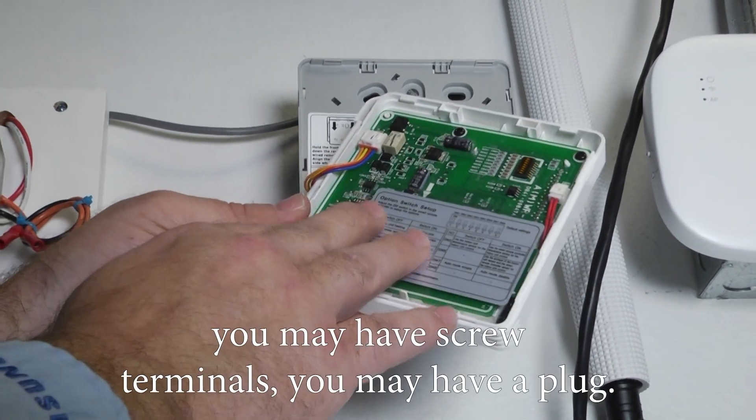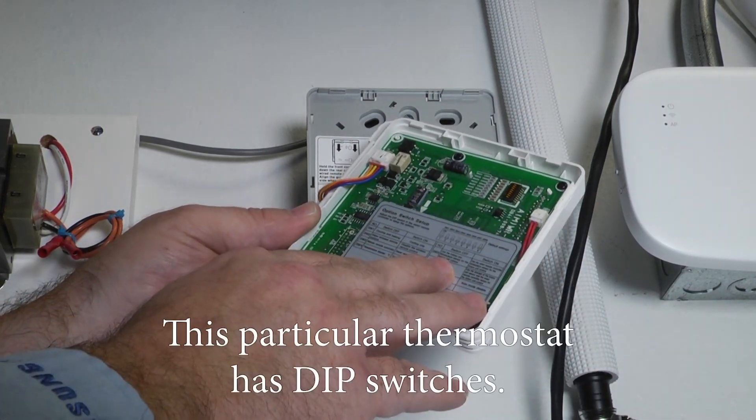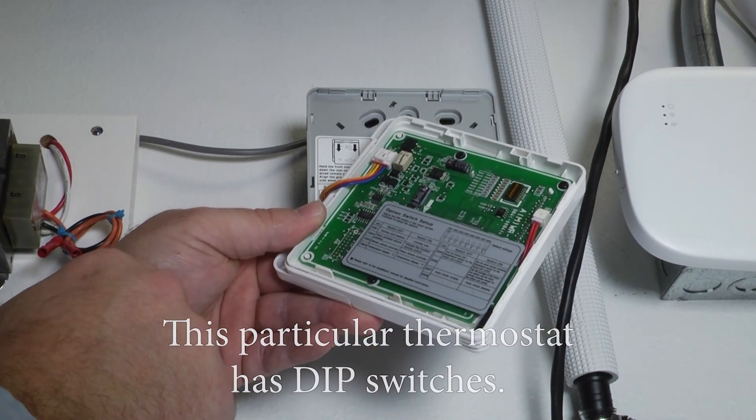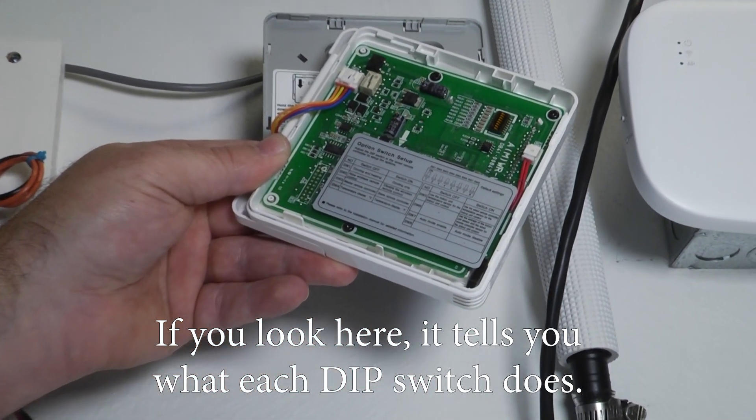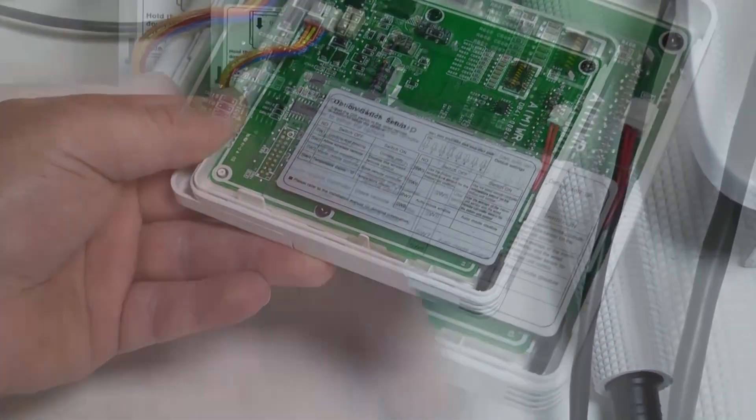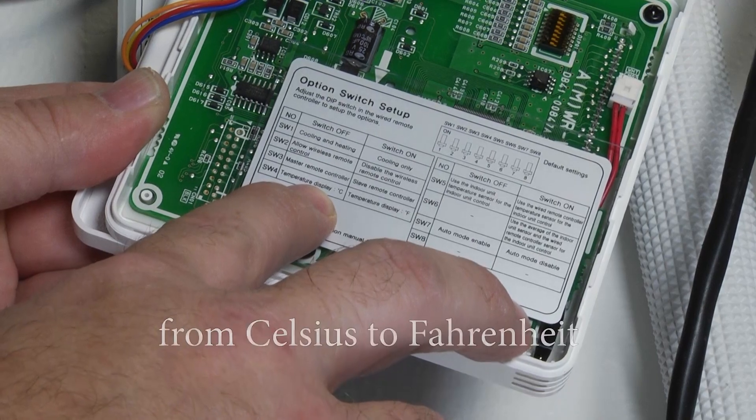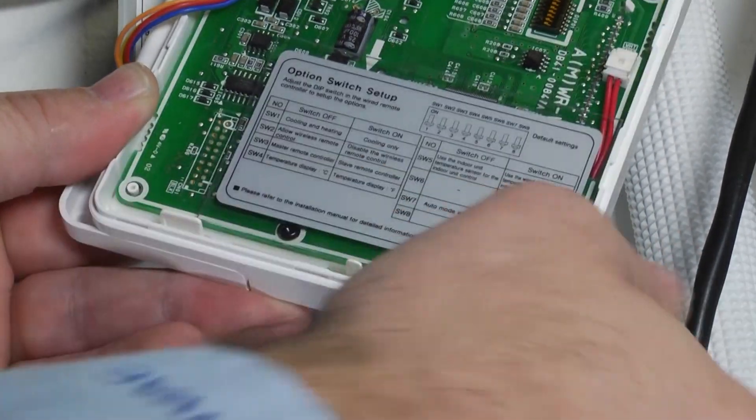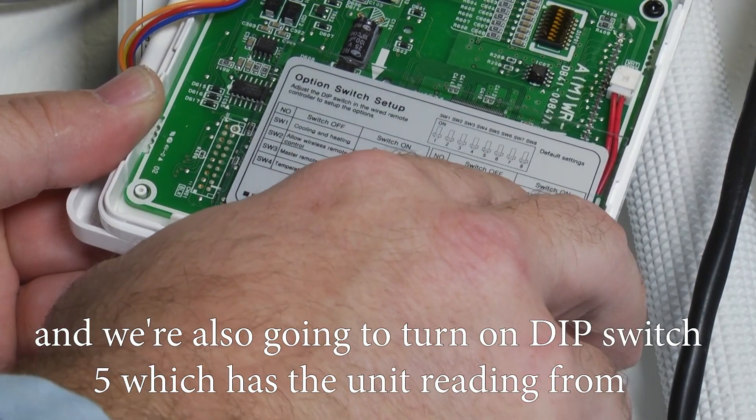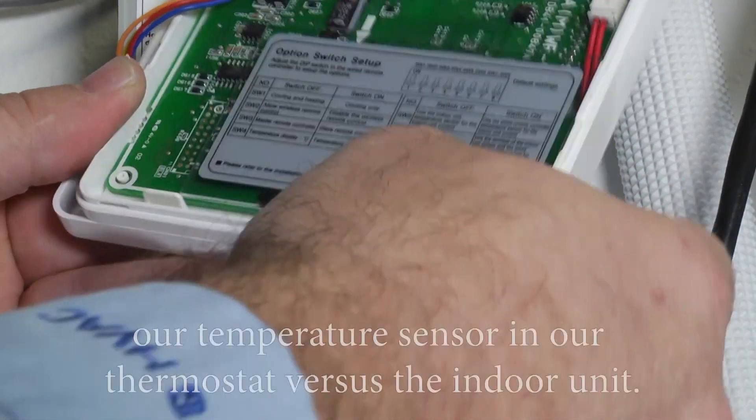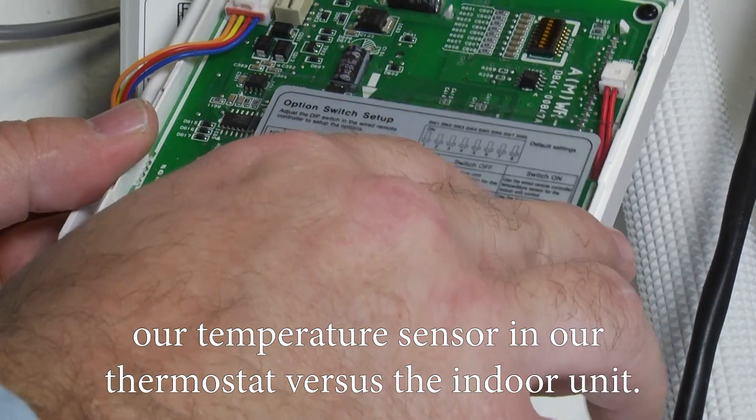Some thermostats will vary. You may have screwed terminals. You may have a plug. This particular thermostat has dip switches. If you look here it kind of tells you what each dip switch does. In this video we're going to turn on dip switch 4 which changes it from Celsius to Fahrenheit. And we're also going to turn on dip switch 5 which has the unit reading from our temperature sensor in our thermostat versus the indoor unit.